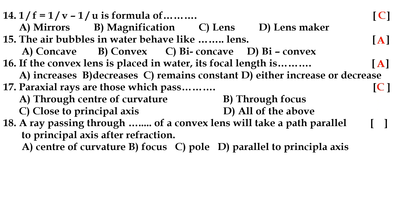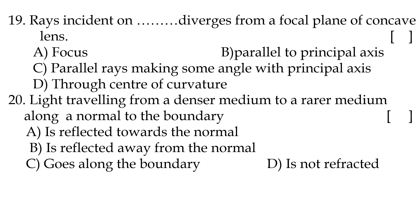Sixteenth question answer: option C — close to the principal axis. The rays which are close to the principal axis are called paraxial rays. Eighteenth question: a ray passing through the focus of a convex lens will take a path parallel to the principal axis after refraction — option B, focus.